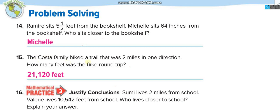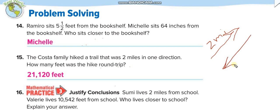Word problem: The Costa family hiked a trail that was 2 miles in one direction and 2 miles back — a round trip of 4 miles total. Since 1 mile equals 5,280 feet, 4 miles equals 4 times 5,280, which is 21,120 feet.